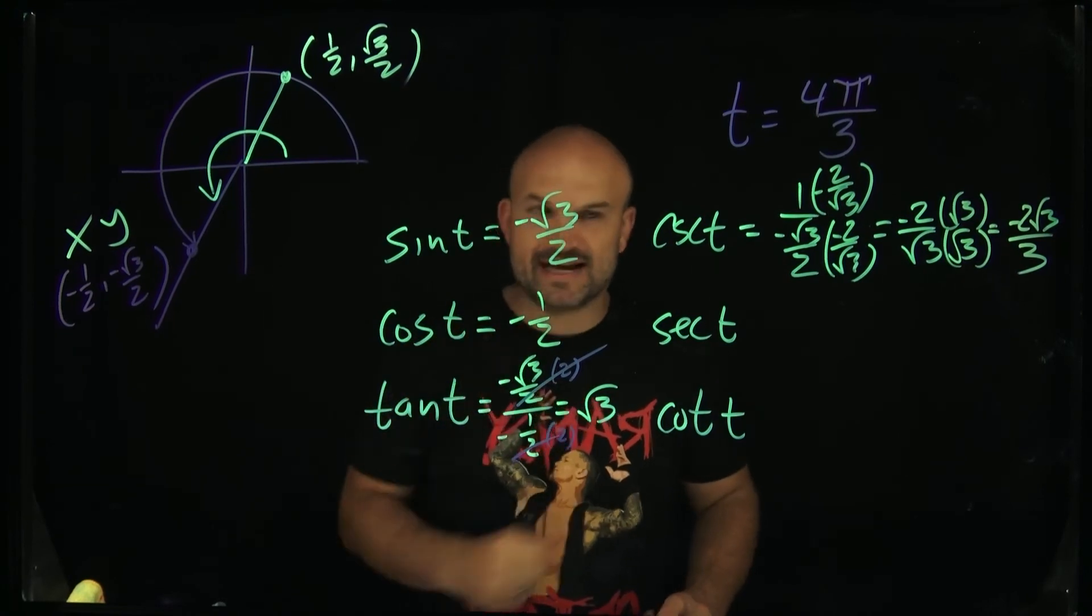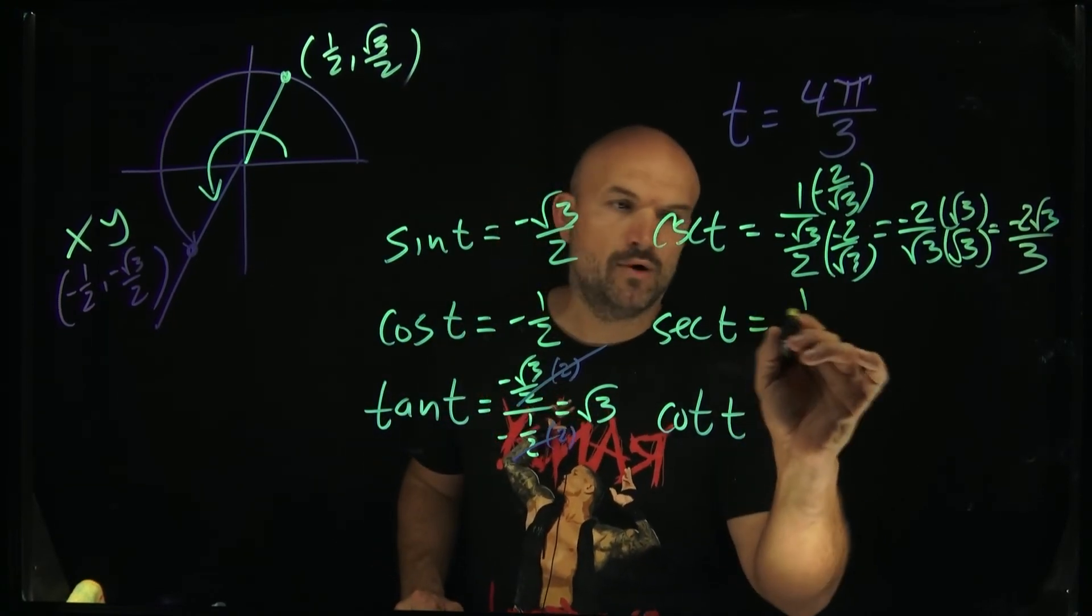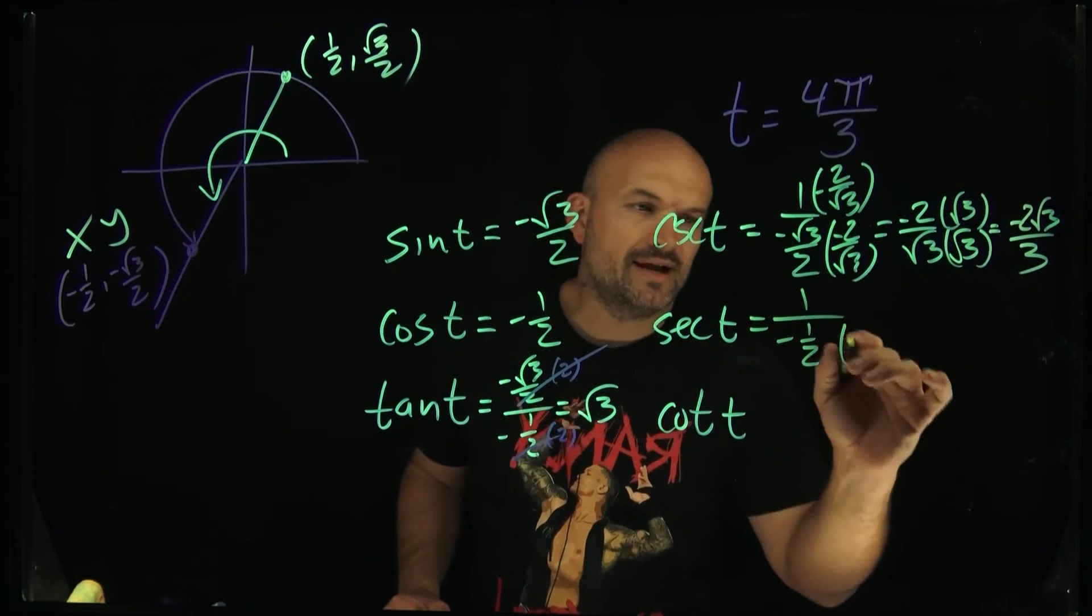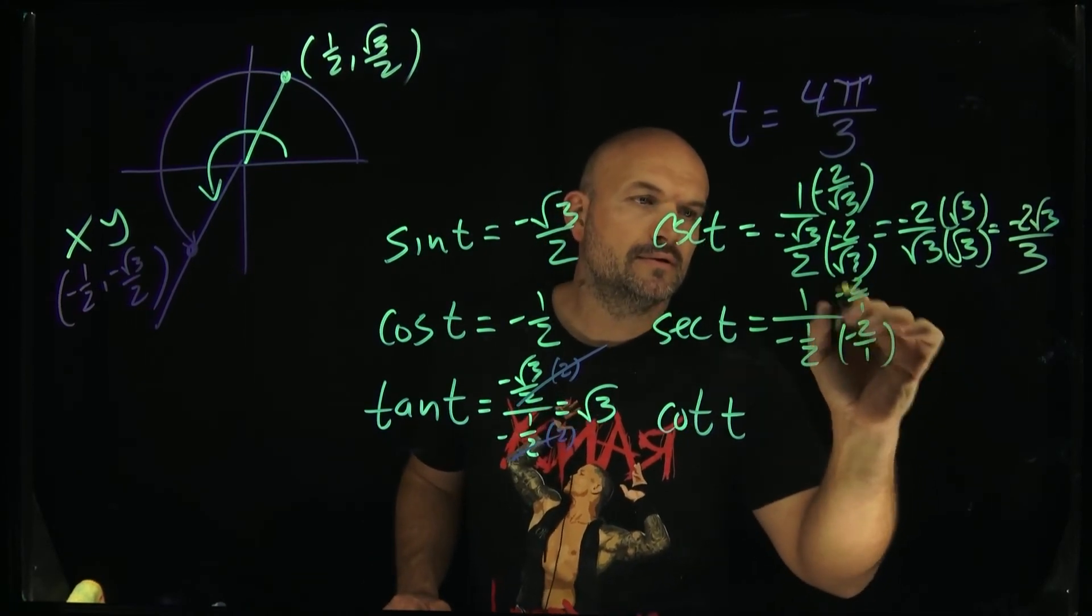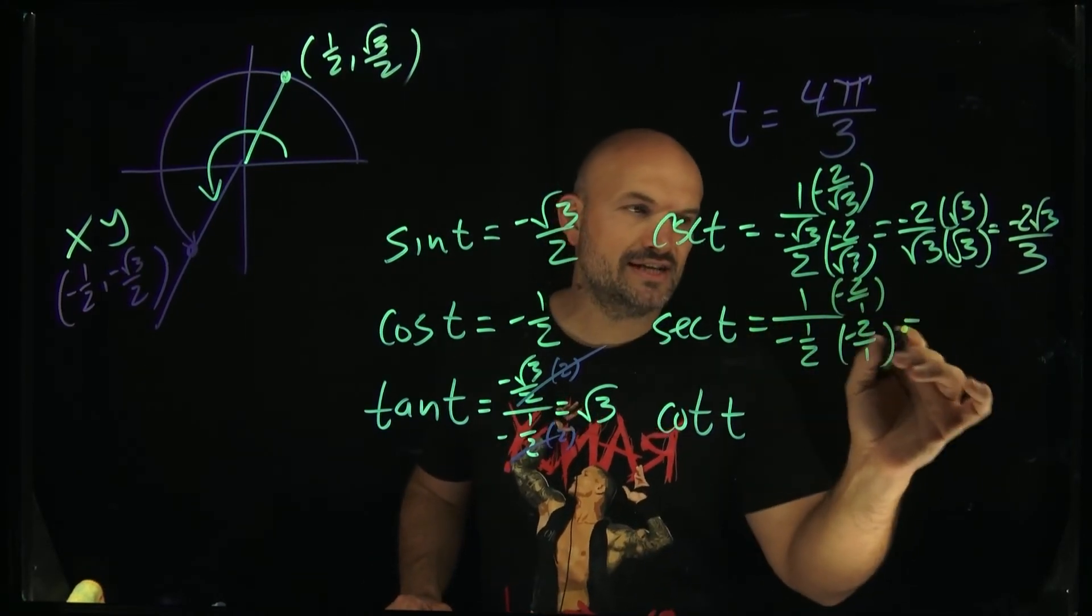Now, in this example, I have cosine of t equals negative 1/2. So basically, that's going to be a 1 over a negative 1/2. Again, multiply by your reciprocal. So that's going to be a negative 2 over 1, and what is that going to give you? That's just going to give you a negative 2.